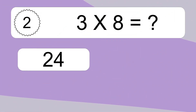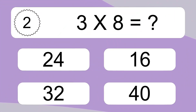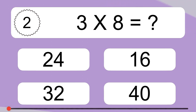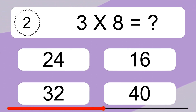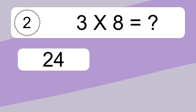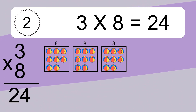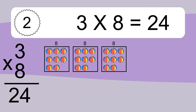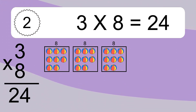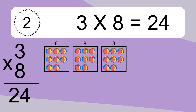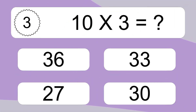3 times 8 equals what? 3 times 8 equals 24. We have 3 boxes, and each box has 8 colorful balls inside. If you count all the balls in all the boxes together, you will have 3 times 8 balls. This equals 24 balls.